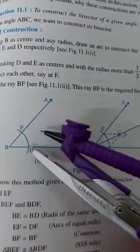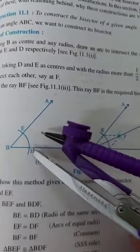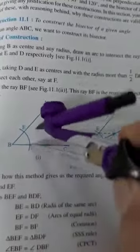Now take more than half the radius of the arc. Place the compass center at D and draw an arc in the interior.